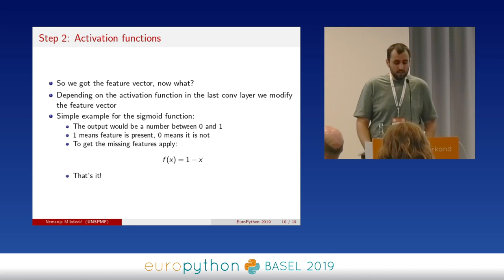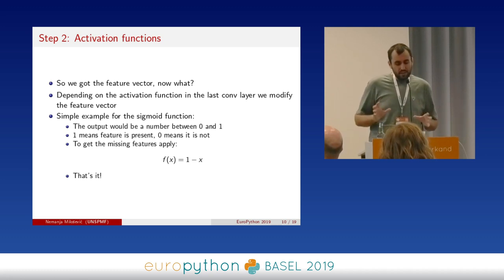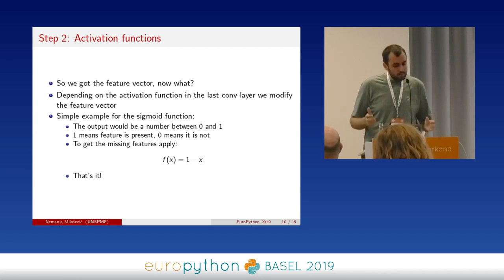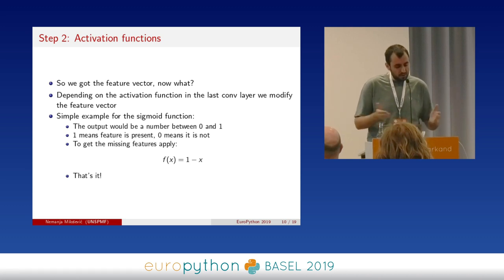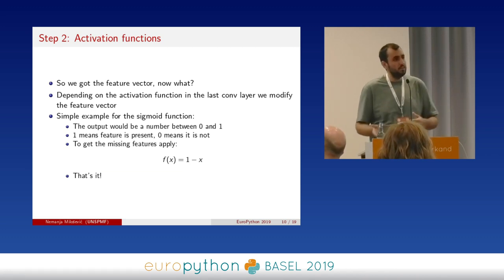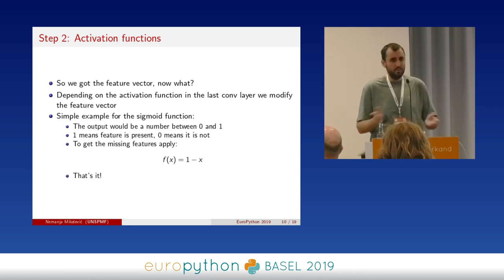For step two, we need to talk a little bit about activation functions. Activation functions are what you apply to the activation of a neuron, which is the sum of all the weights and biases. We need to be careful here, because we want to inverse or negate the output of the last convolutional layer. The transformation of this feature positional vector will depend largely on the last activation function in that layer. Simple example: if we have a sigmoid function, it outputs a number between 0 and 1. We can say 0 means the feature is not there and 1 means the feature is there. If we want to negate this vector, we simply apply 1 minus x for each element. If a feature was present with value 1, it will become 0, and vice versa. Very simple.